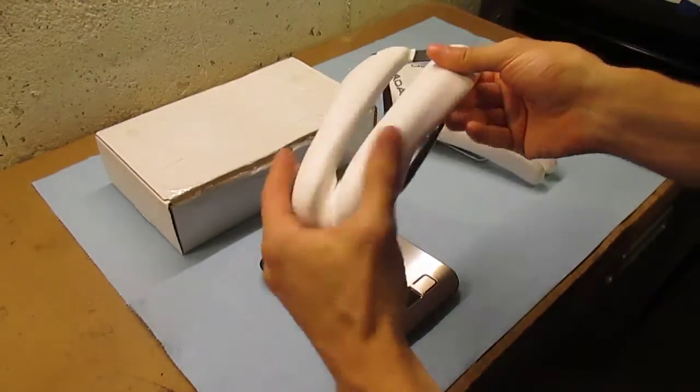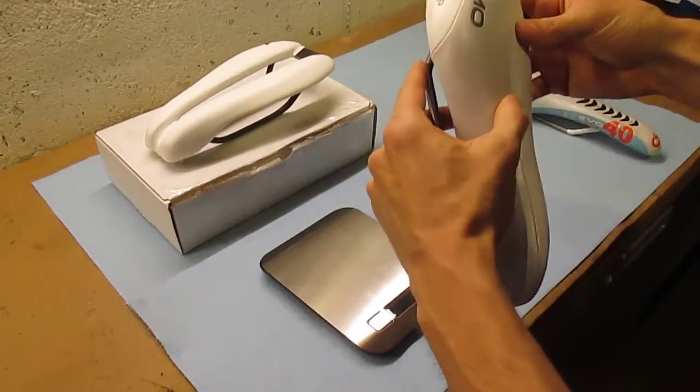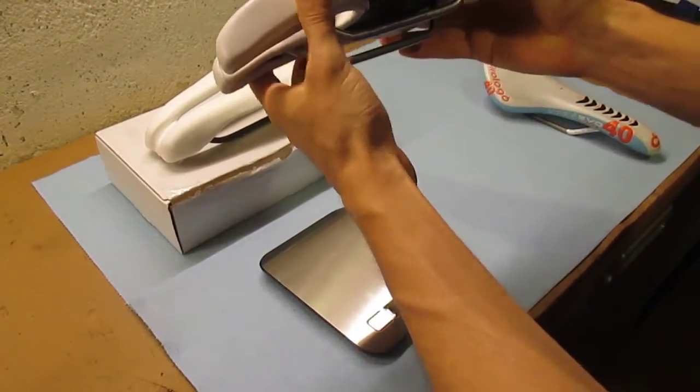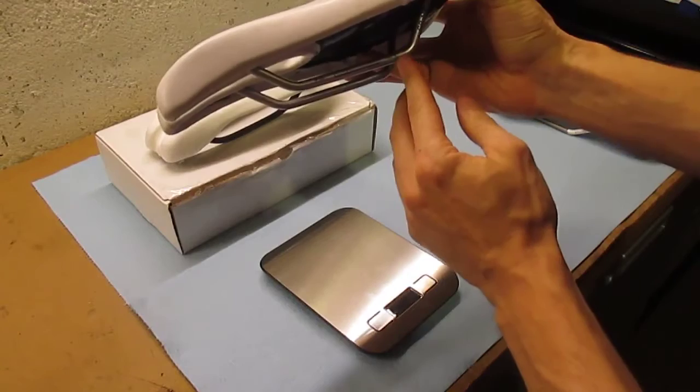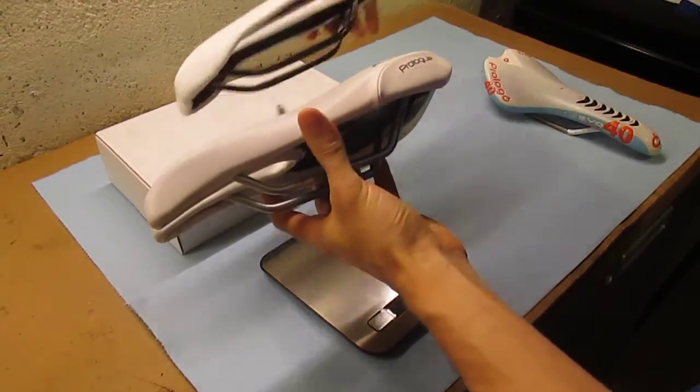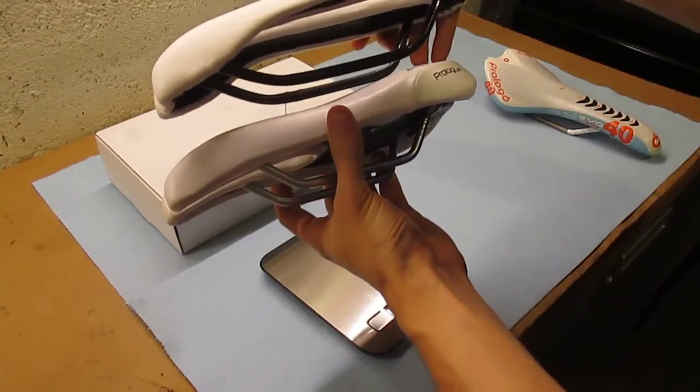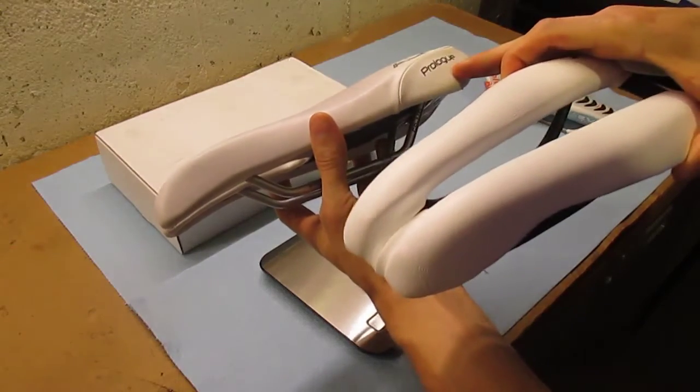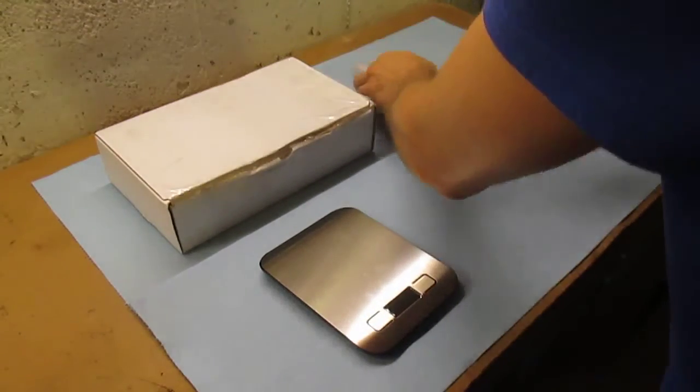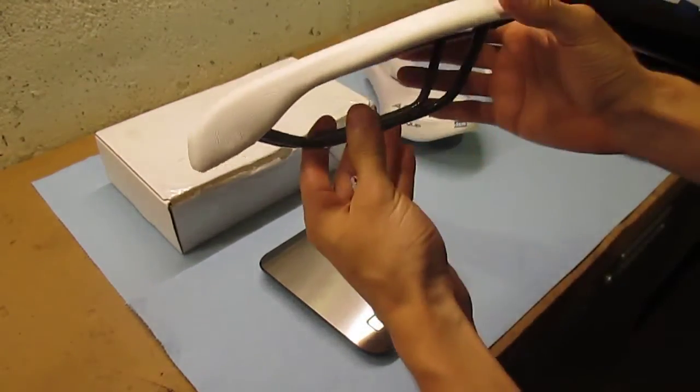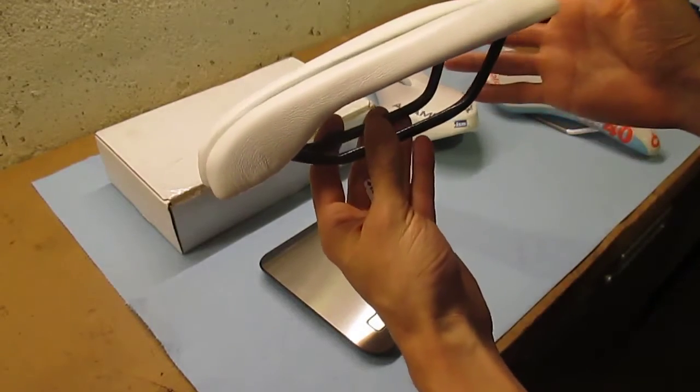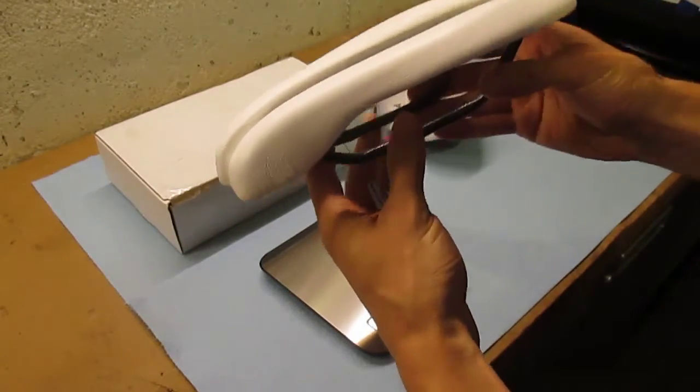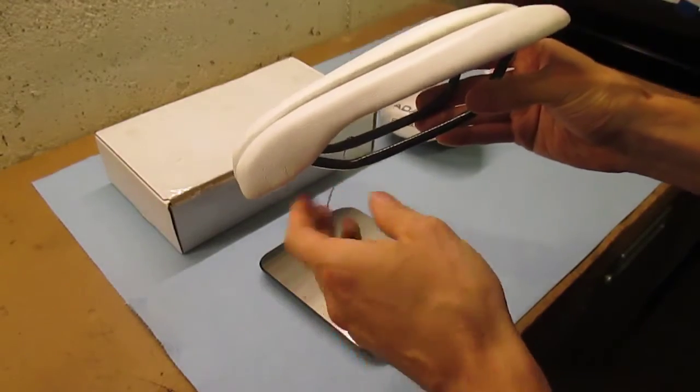The other thing I noticed is that with my Adamo Prologue, I had it on my bike as forward as it can go. And I was not able to get this saddle quite as forward as the Prologue. But even though I couldn't get it as far forward, I still felt that it was just as comfortable and worked just as well in the position that I was able to get it.